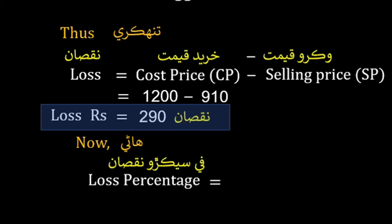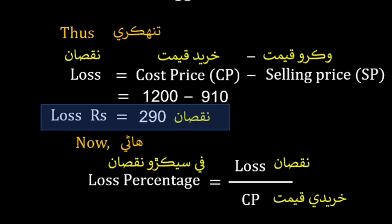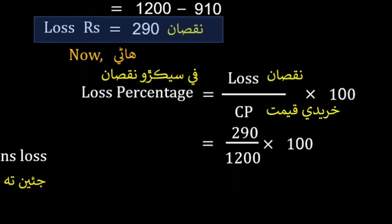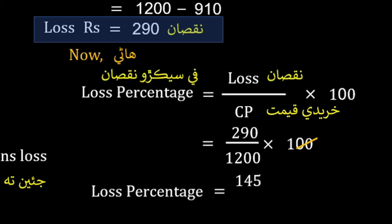To find the loss percentage, use the formula: loss divided by cost price, multiplied by 100. Loss is 290 rupees and cost price is 1200 rupees, so loss percentage = 290/1200 × 100 percent.